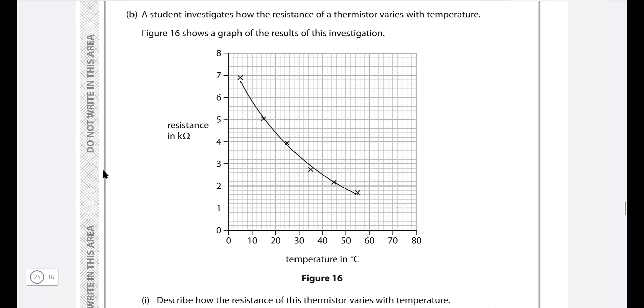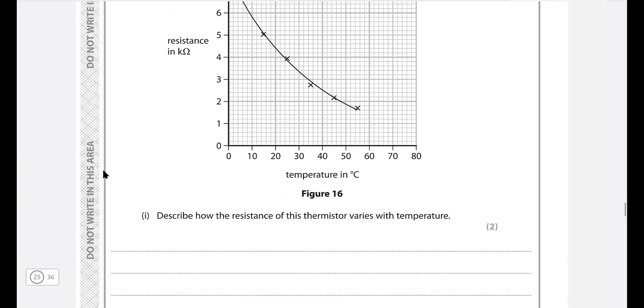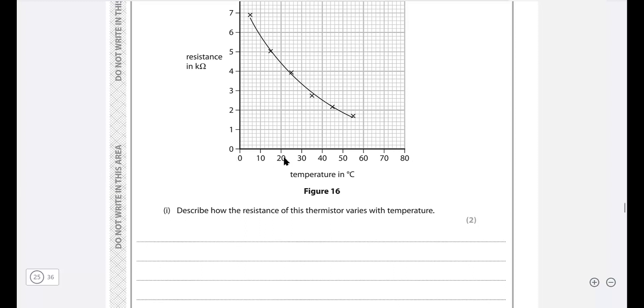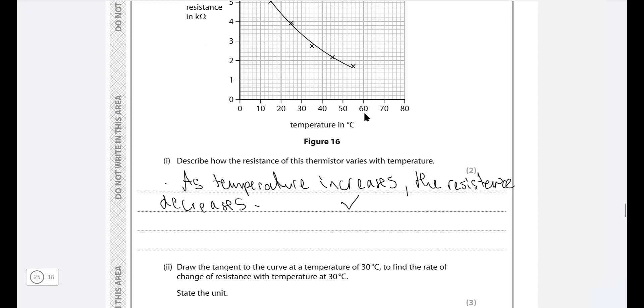Next one. A student investigates how the resistance of a thermistor varies with temperature and we have a graph of this. Describe how the resistance of the thermistor varies with temperature. The first thing to note is that as temperature increases the resistance goes down. So let's just write this as temperature increases, the resistance decreases, and this will be one of our marks. This is not enough because we need to also say how does it happen. If it's linear, if it's at a constant rate, this will be a straight line, but it's not. So we need to comment on that. We need to say that the line is kind of getting flatter, it's getting less steep, and the way we would scientifically write this is that the gradient is decreasing.